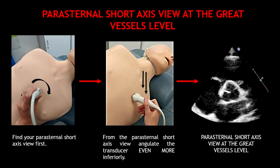The last view is the parasternal short axis view at the great vessels level. To obtain this view, find your parasternal short axis view first, then angulate the transducer even more inferiorly until you're able to see the aortic valve.